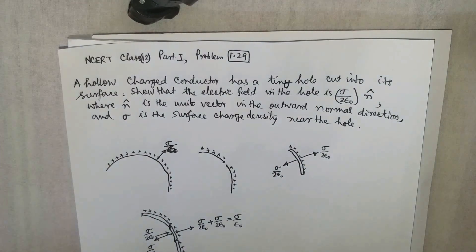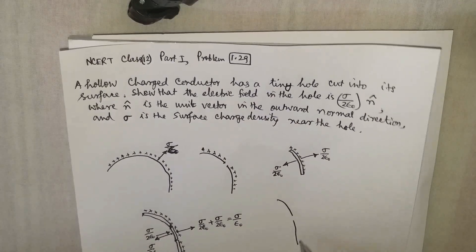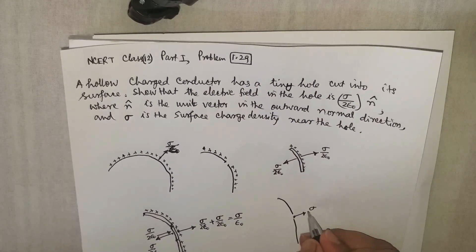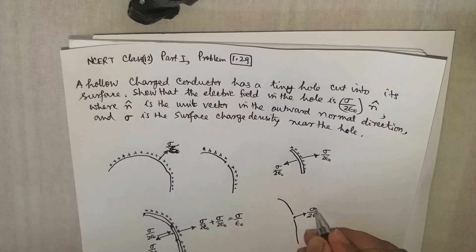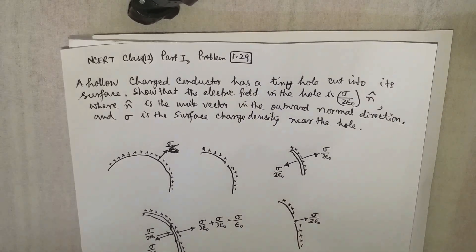The electrostatic field very near to the hole, after I replace it exactly at this particular point, is due to the remaining portion of the conductor which will be equal to sigma by 2 epsilon naught after we remove this portion. So that is a small demonstration that was asked in this question.